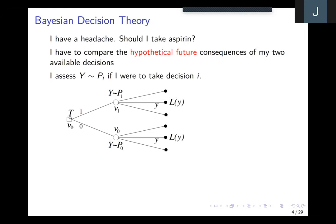I can set this out in a traditional decision tree. There's a decision node: one branch is active treatment aspirin, and if I do that I arrive at a chance node where there will be an uncertain outcome — whatever my epistemic uncertainty, there will be a distribution over the various possible values of my outcome. I might have a loss function measuring how bad that will be. In exactly parallel fashion, I can consider what would happen if I were to take the chalk tablets — I move to a different chance node where I assess a different future, a different distribution over what's going to happen to my headache.